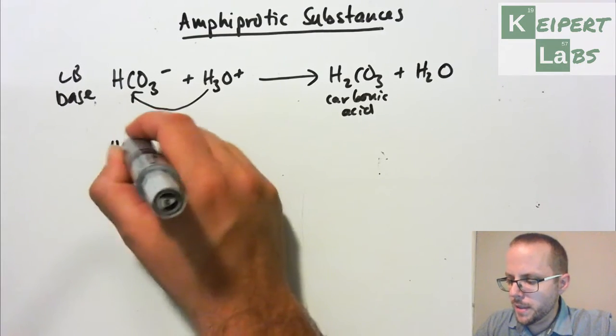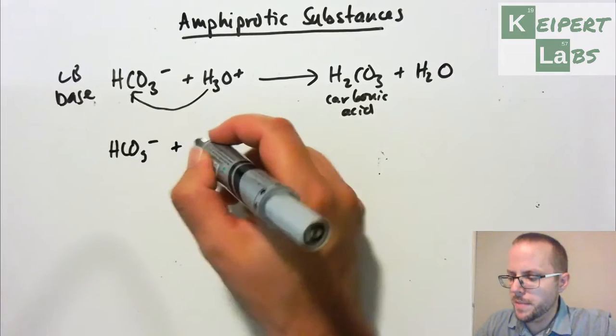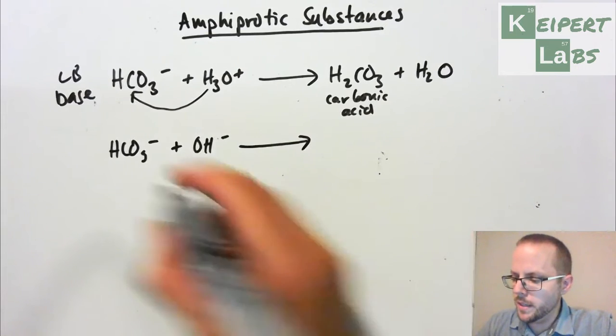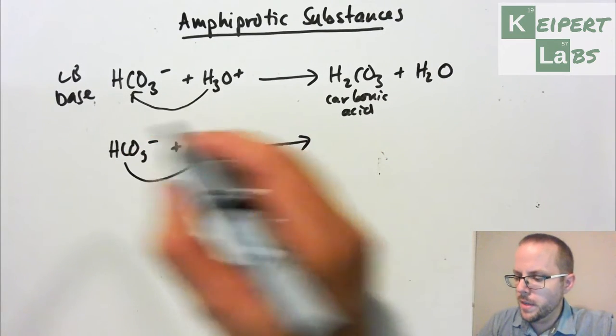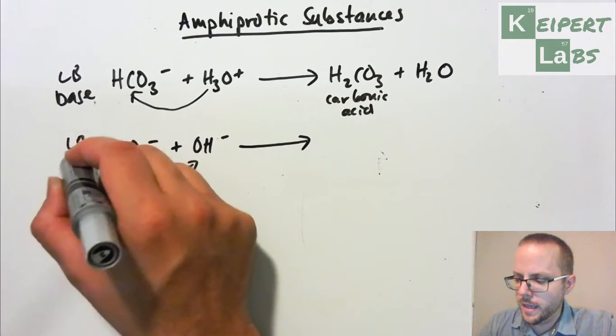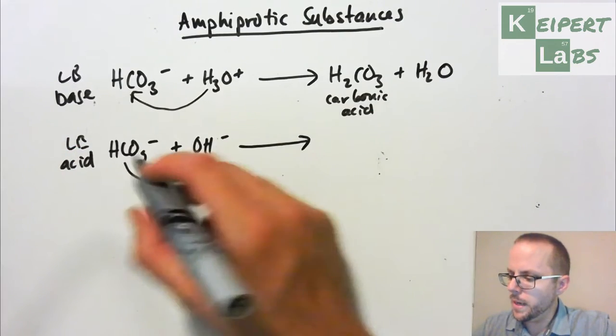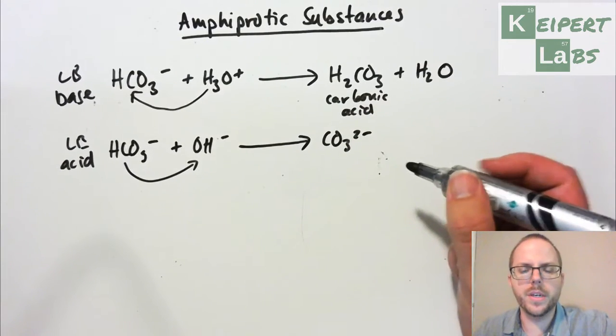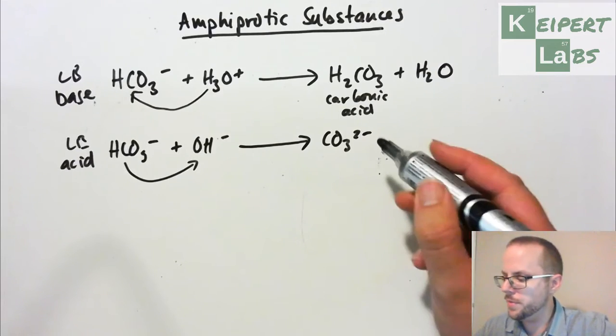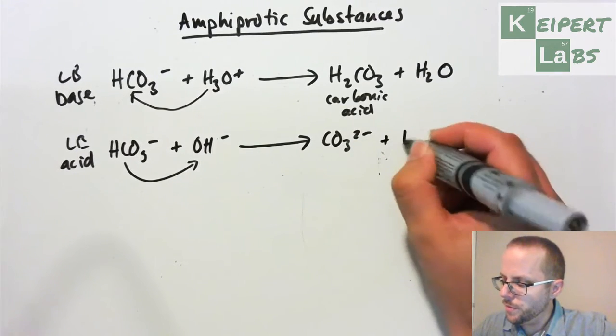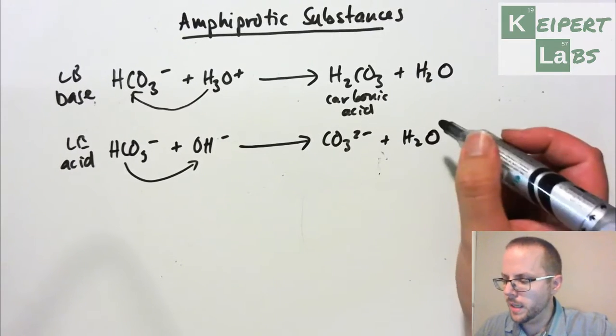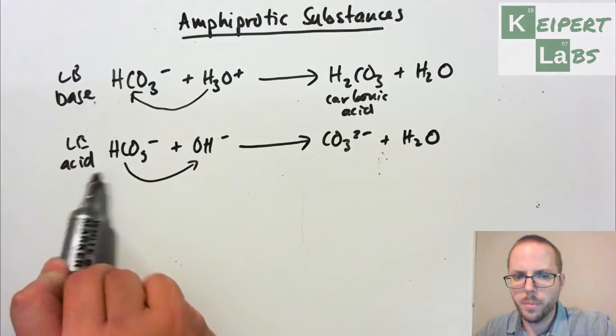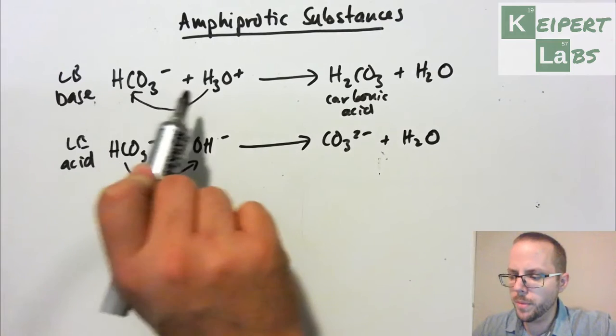However, if we place this bicarbonate ion in the presence of something that's basic, then what it does is that it's going to actually donate its proton to it. It's therefore acting as a Lowry-Bronsted acid. And so what we end up forming, we've taken away a hydrogen with a positive charge, so it goes down from minus one to minus two to form the carbonate ion. And we've also formed water again. In this situation it can act as either a Lowry-Bronsted acid when we put it with base, or as base when we put it with acid.